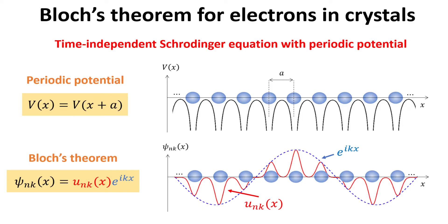In this video, we're going to go through the basics of Bloch's theorem, explaining why it is the case and its implications to the behavior of electrons in crystalline materials. We will begin by discussing spatially periodic potentials and periodic boundary conditions for the wave function of electrons. Next, we're going to state Bloch's theorem and prove it by directly solving the time-independent Schrödinger equation in a periodic potential. This video sets the stage for our upcoming discussion on band theory of solids.